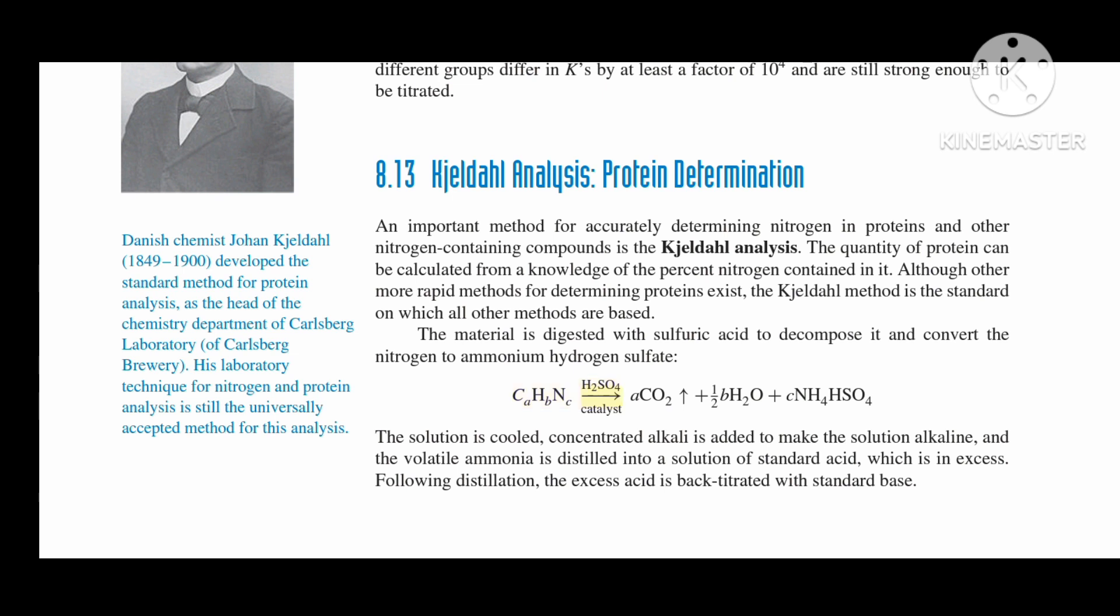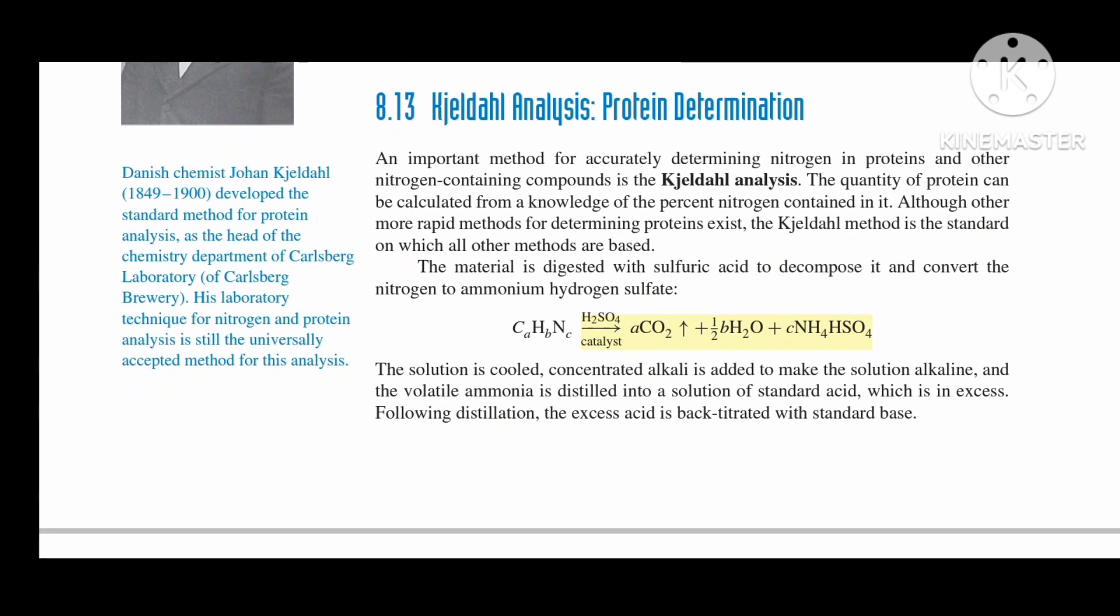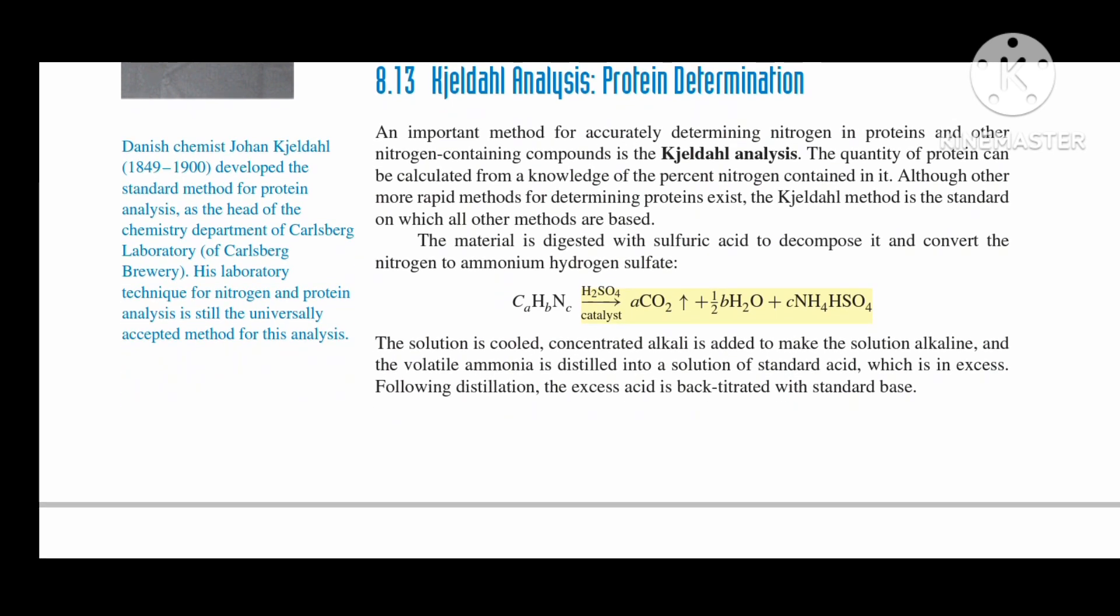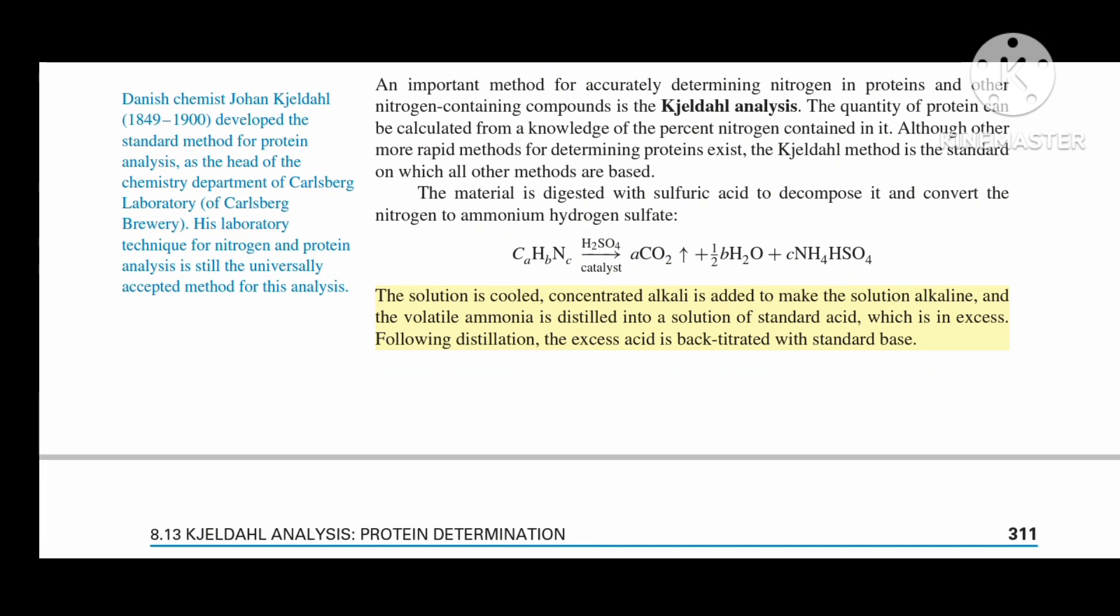The material is digested with sulfuric acid to decompose it and convert the nitrogen to ammonium hydrogen sulfate: CaHbNcO + H2SO4 → (catalyst) aCO2↑ + ½bH2O + c(NH4)HSO4. The solution is cooled, concentrated alkali is added to make the solution alkaline, and the volatile ammonia is distilled into a solution of standard acid, which is in excess.